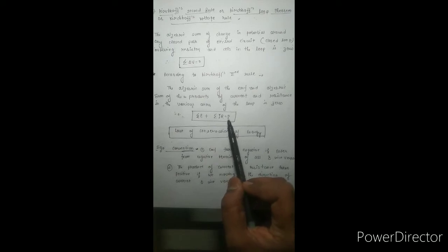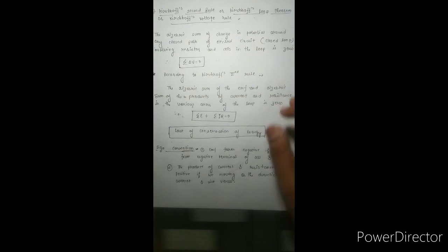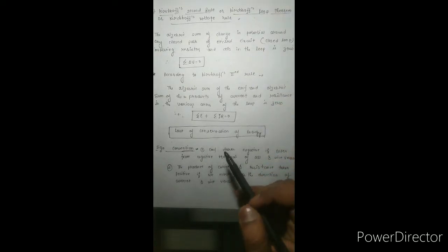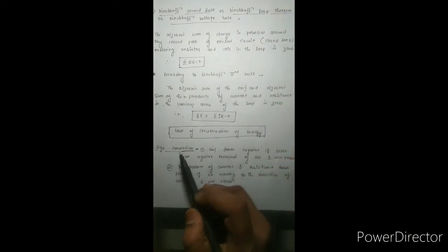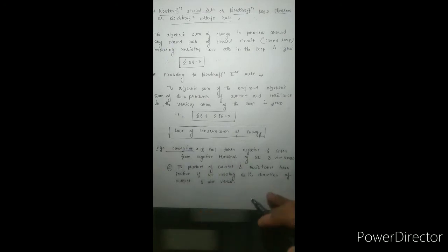The drop of potential is equal to zero. This actually defines the law of conservation of energy. The first law represents the conservation of charge and the second rule represents the law of conservation of energy.